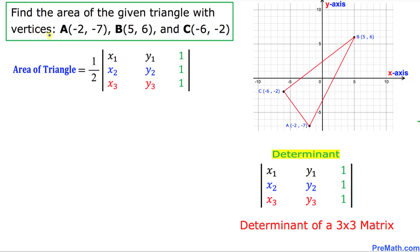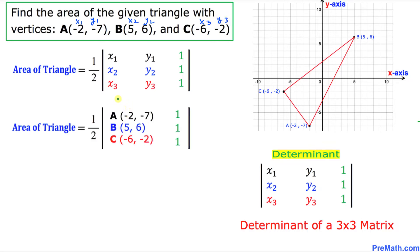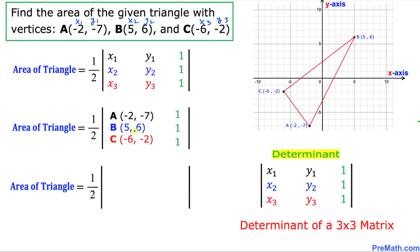Now let's focus on our vertices A, B, and C. Vertex A has coordinates (x1, y1), vertex B has coordinates (x2, y2), and likewise C has coordinates (x3, y3). We can write the area formula in terms of these points. The vertices can be written in the determinant as: negative 2, negative 7, 5, then 6, negative 6, negative 2, and the right-hand column entries are simply ones.